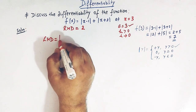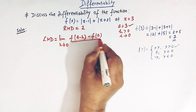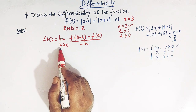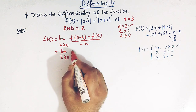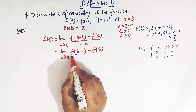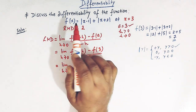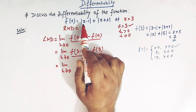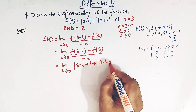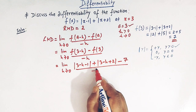Now the left hand derivative is defined by: limit h tends to 0 of [f(a - h) - f(a)] / (-h), where a = 3 and h is a positive quantity tending to 0. So we write limit h tends to 0 of [f(3 - h) - f(3)] / (-h). f(3 - h) is obtained by replacing x with 3 - h: |3 - h - 1| + |3 - h + 2| = |2 - h| + |5 - h|, and f(3) = 7.